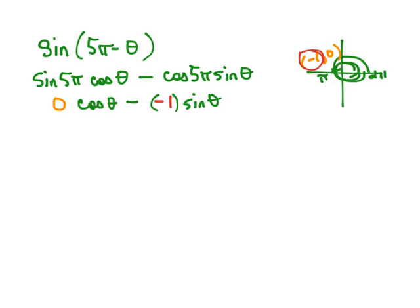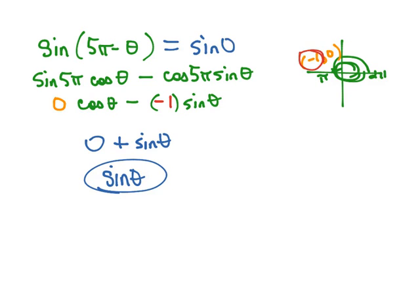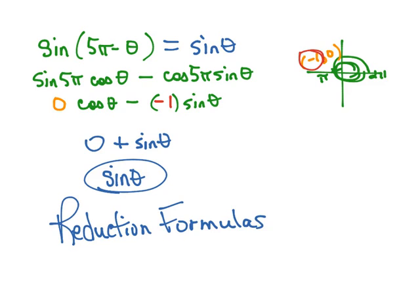And so 0 times anything is 0, minus a negative would be plus, so we get the sine of θ. Sometimes these are called reduction formulas because they reduce our formula down to a simpler trig function.